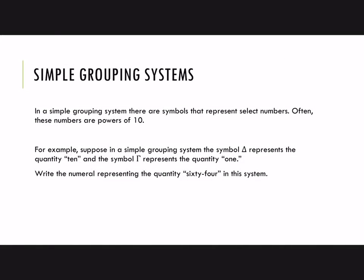In a simple grouping system there are symbols that represent select numbers, not just a single symbol like a tally. Often these numbers are powers of 10 — it's kind of natural for us to count by 10s, we have 10 fingers and 10 toes, so that may be one reason we chose the number 10. Here's a made-up example — this is not a historical numeration system, but it illustrates how a simple grouping system works. Let's say the symbol delta represents the quantity 10.